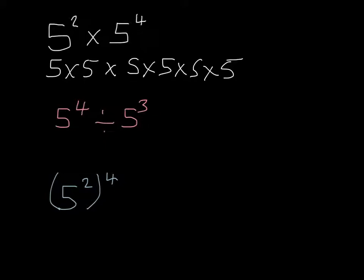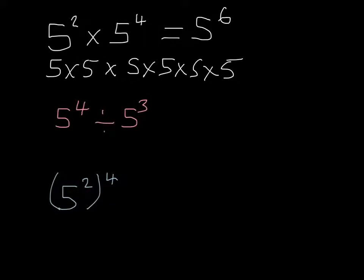So altogether we are multiplying these two 5s and these four 5s together, which makes six 5s multiplying together. That tells me that 5 squared times 5 to the power of 4 is going to be equal to 5 to the power of 6. A quick way of getting there is that we can add this power and this power together to give us this power here.